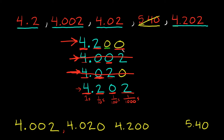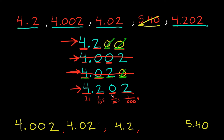Remember, I added those trailing zeros myself just to compare the numbers, so I can take them out. So instead of 4.200 I really just have 4.2. And that 4.020 is really just 4.02. By process of elimination, the last remaining number is 4.202.